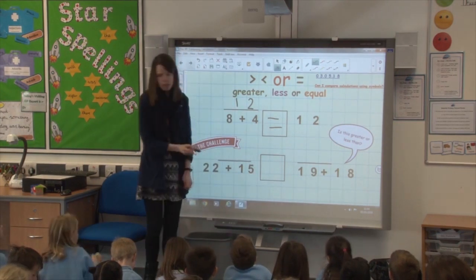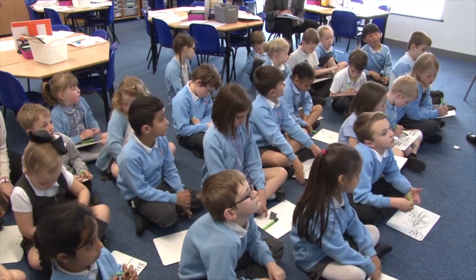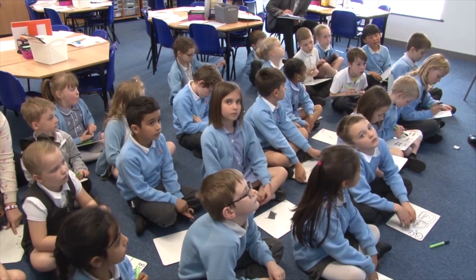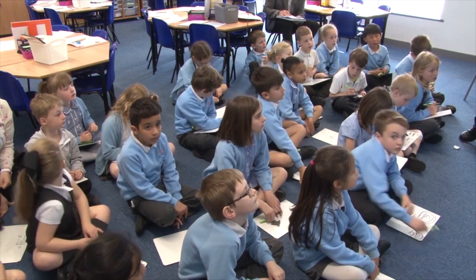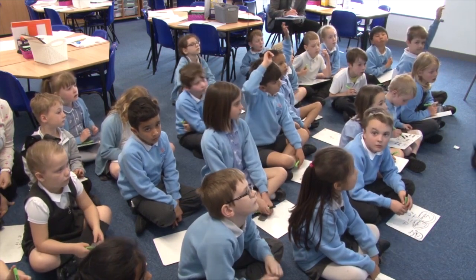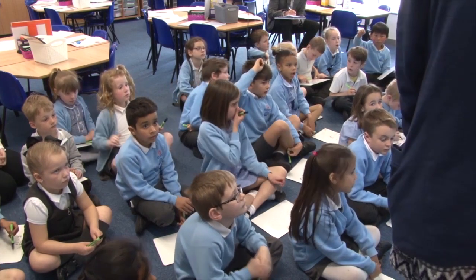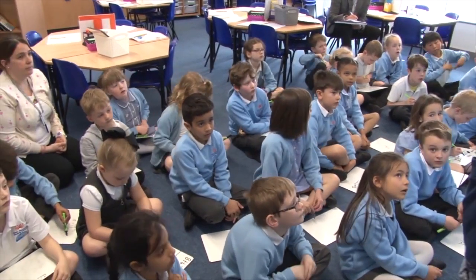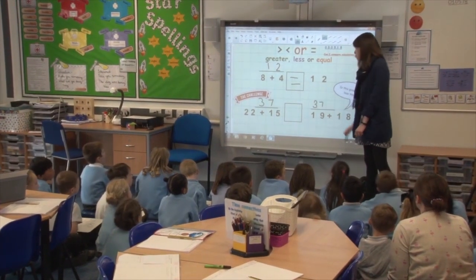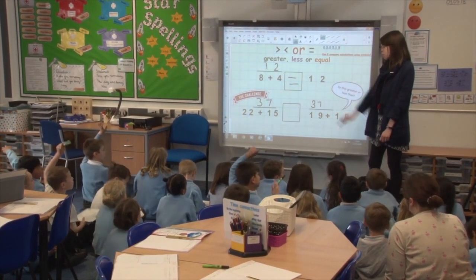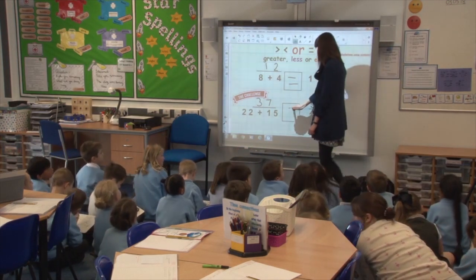Did anyone get on to the challenge? Jingfan. What is twenty-two add fifteen? Thirty-seven. Well done. And what is nineteen add eighteen, Shona? Thirty-seven as well. So what is my answer going to be? What symbol am I going to put in? Jaden? Equal to. Well done.